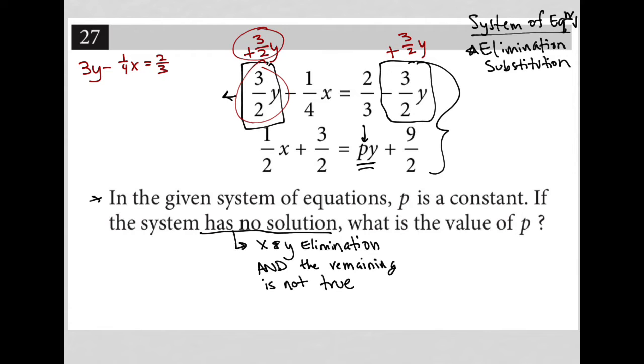And then for the bottom equation, I want it to be in the same exact order. So I'm going to start off with my positive pY. And now I want my X term over. So that means I need to bring this one half X over to the right-hand side. In order to do that, I'd have to subtract one half X from both sides.